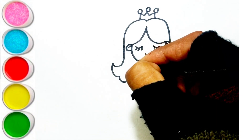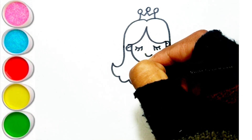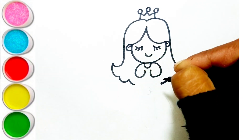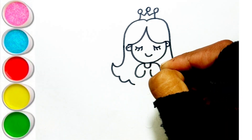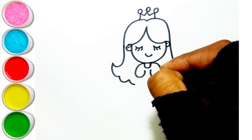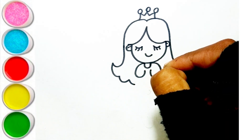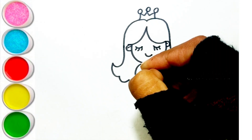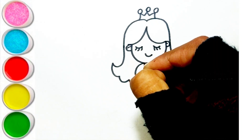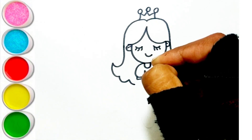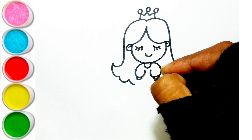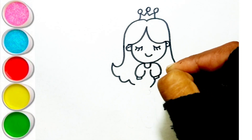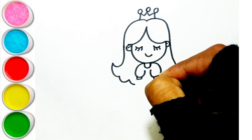A is for Apple. A, A, Apple. B is for Ball. B, B, Ball. C is for Cat. C, C, Cat. D is for Doll. D, D, Doll.